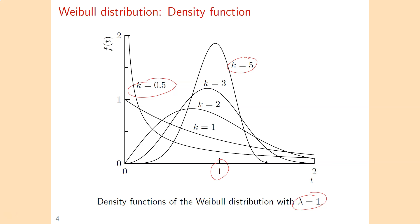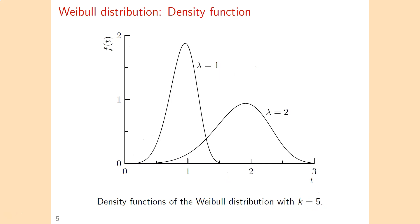For k equal to 5, it's most likely the failure occurs close to 1. We can also see that if we change the scale parameter, the shape of the density function does not change. But if you double the value of the scale parameter, then the Weibull distribution will basically be stretched, so all inter-failure times will get twice as long.